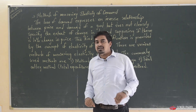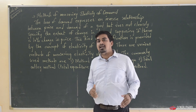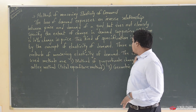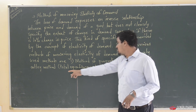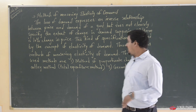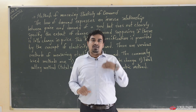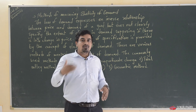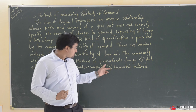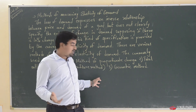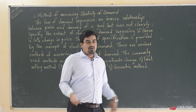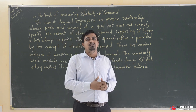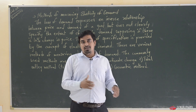To know to what extent the demand for a commodity has changed, you need to understand the concept of elasticity of demand. There are various methods of measuring elasticity of demand. The commonly used methods are: the method of proportionate change, the total outlay method (also known as the total expenditure method), and the geometric method. These are the methods that can be used in order to find out the elasticity of demand.